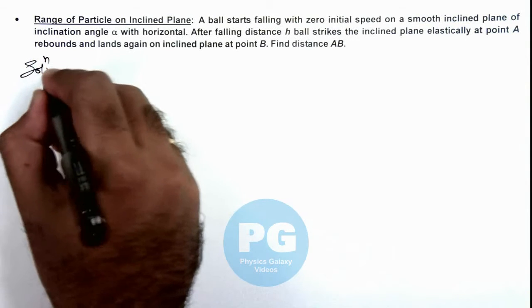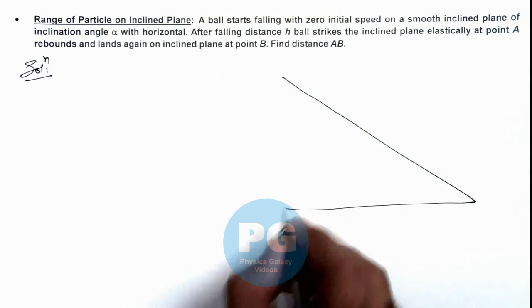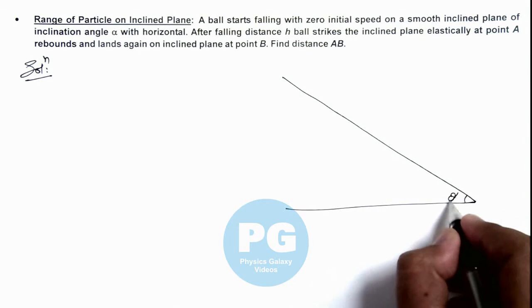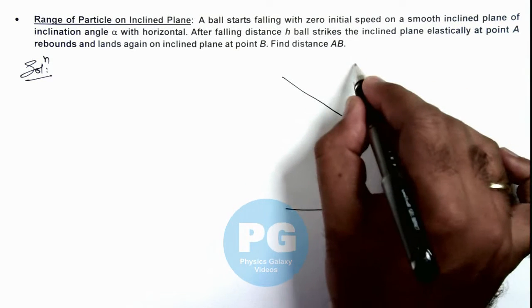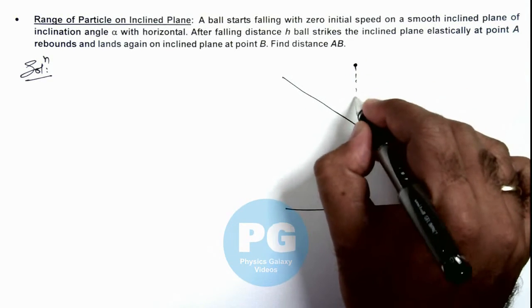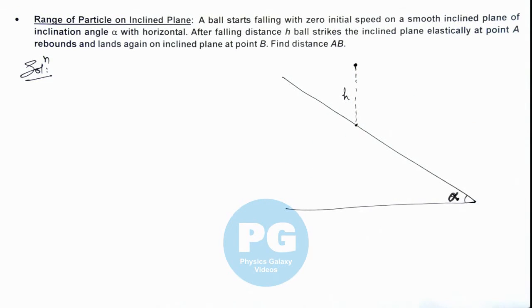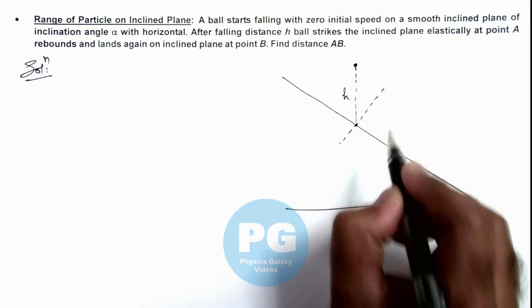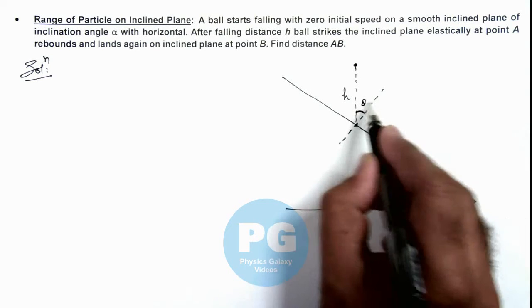To understand the situation better, if we draw the picture, you can see this is an inclined plane of angle alpha with the horizontal. A ball is falling freely and it falls by a distance h and strikes the plane. If we calculate the angle with the normal, this ball will certainly make this angle alpha.